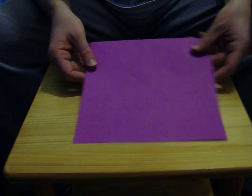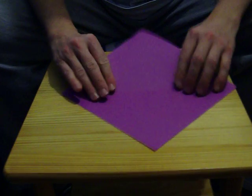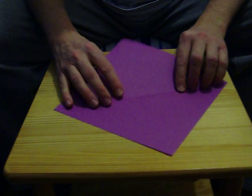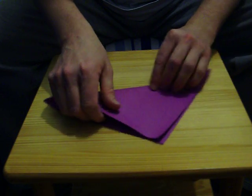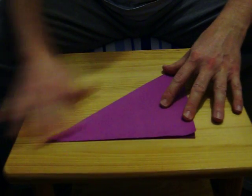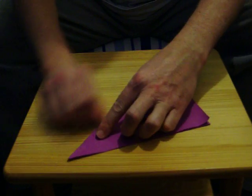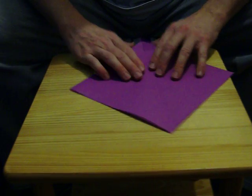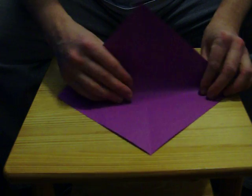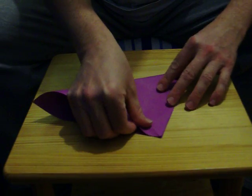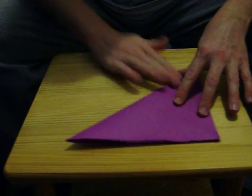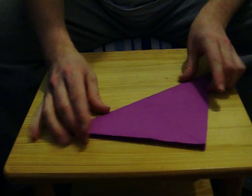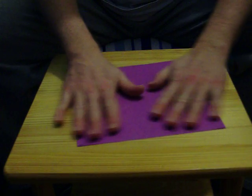First of all, take one corner and fold over as so. That's called the valley fold. Unfold this and on the other corner do exactly the same process. That's another valley fold. Open out the paper.